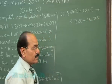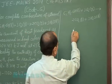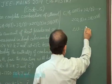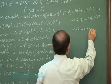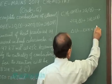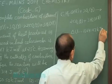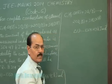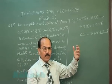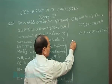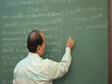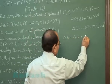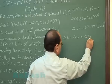For this combustion reaction, delta U is given as minus 1364.47 kilojoule per mole. We have to find out the change in enthalpy. The change in enthalpy is related to the change in internal energy plus delta-Ng times R times T.